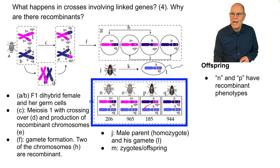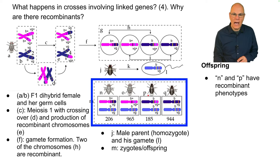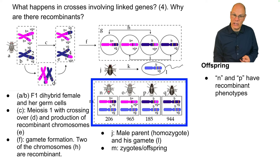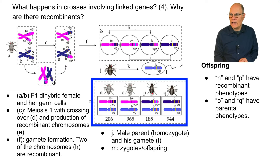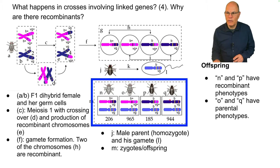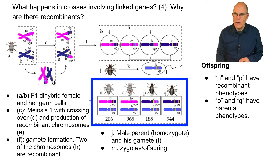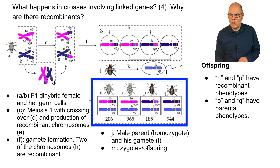Here's what happens with the offspring. Offspring N and P have recombinant phenotypes: in this case, gray body vestigial wings, and black body normal wings — neither of the parents looked like that. But O and Q are parental phenotypes: O is gray body normal wings, and Q is black body vestigial wings.